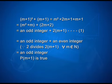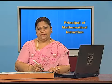Since 2 divides 2(m+1) for every m belonging to N, the sum of an odd integer and an even integer gives us an odd integer. This implies P(m+1) is true. An even integer is always divisible by 2 and an odd integer is not. For example, 1, 3, 5, 7 are odd integers and 2, 4, 6, 8 are even integers.